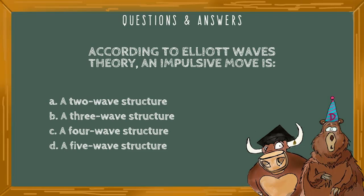Hello and welcome back to questions and answers. According to Elliott Wave theory, an impulsive move is: a) a two wave structure, b) a three wave structure, c) a four wave structure, or d) a five wave structure.